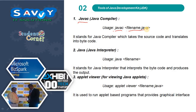javac stands for Java compiler, which takes the source code and translates it into bytecode. The next tool is java — it is the Java interpreter. It converts bytecode into machine code and executes the program. The command is: java filename. It stands for the Java interpreter, which interprets the bytecode and produces the output.